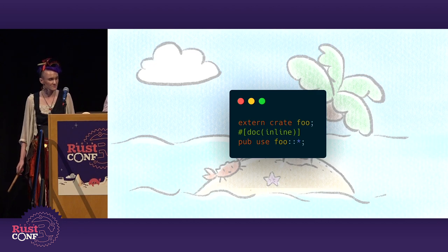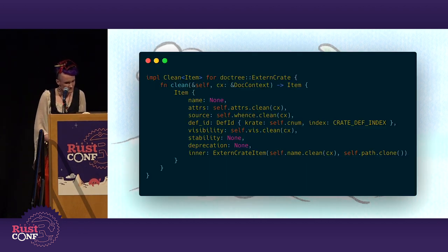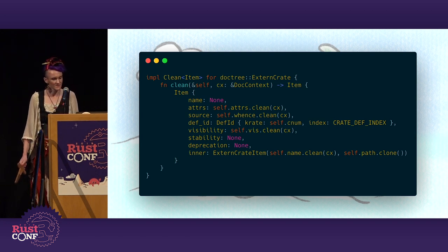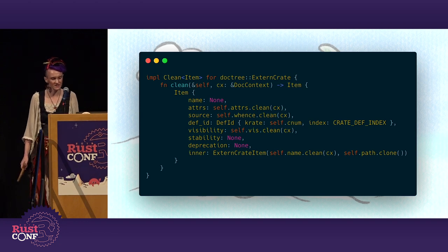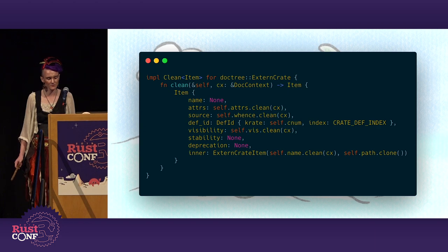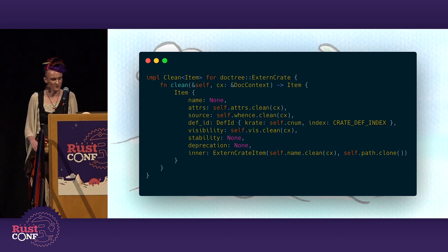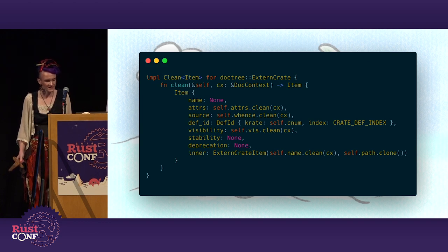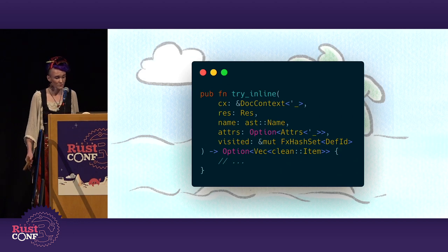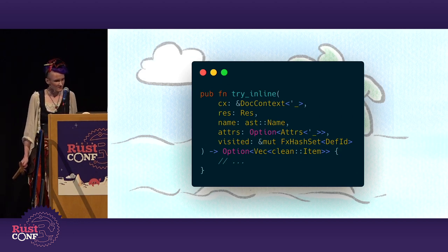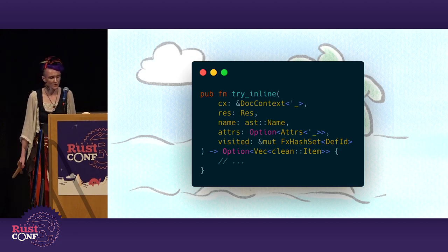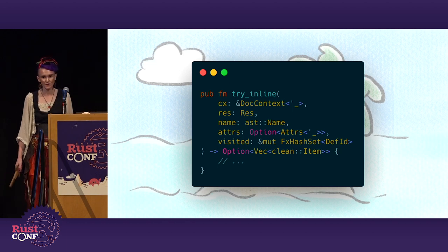Let's look at the section of code for crates and crate items. This section currently cleans up the extern crate and returns a single extern crate item. Our implementation for showing the exported crate items needs to go inside the clean trait function for an extern crate. We know that we may return multiple items since there are many items that can be exported from a crate. We want to add the item names to a 'please inline' list. If we have the doc inline attribute above the item, we iterate through items and if an item is in the please-inline list, we try to inline it. There are certain situations where an item can't be inlined, so we need to take that into account.